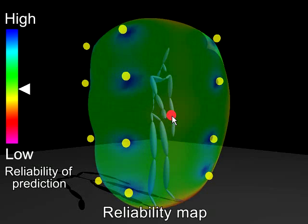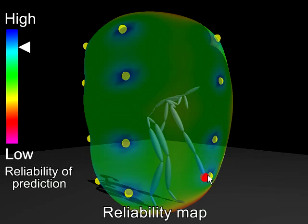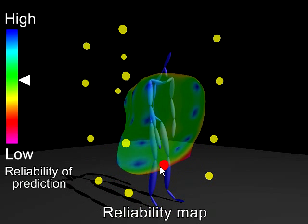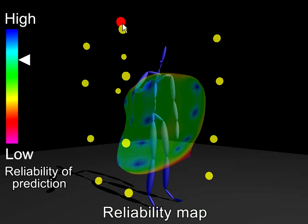This color map indicates the reliability of predictions. Our method can estimate the reliability at every motion frame. Notice that the shape of the map indicates the predicted intermediate hand positions, which change smoothly over time.